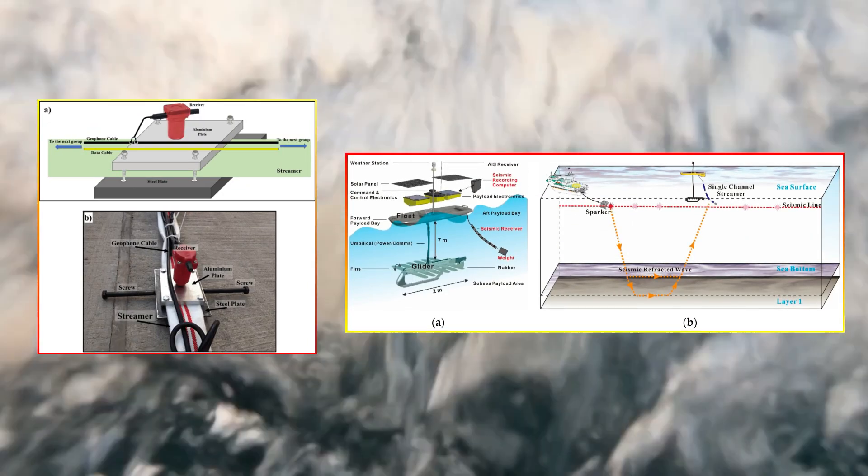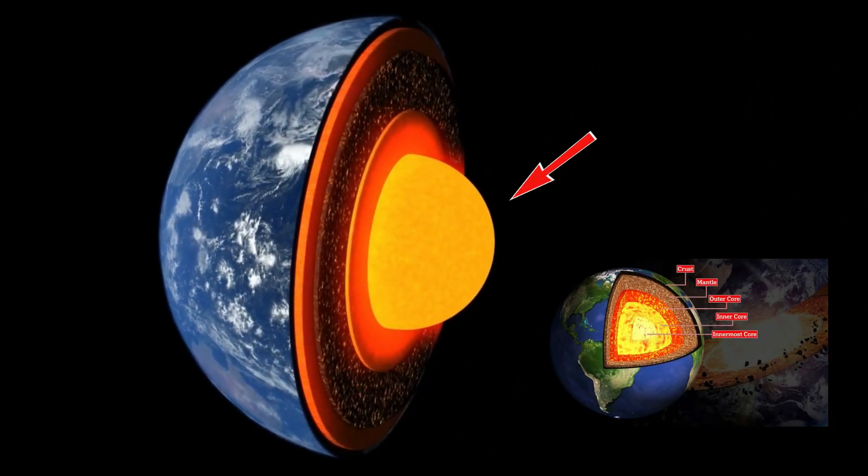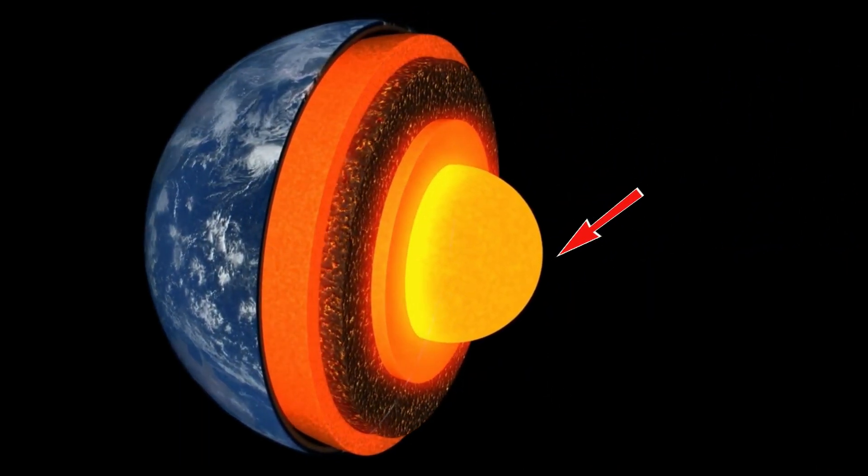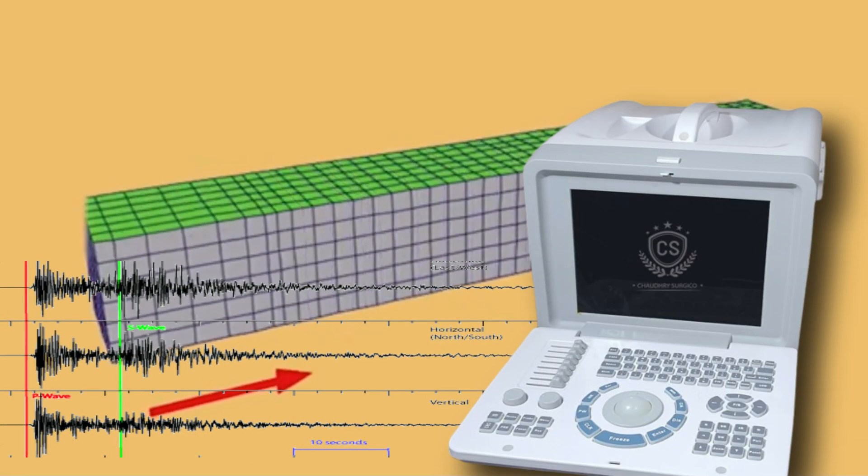This connection remains speculative for now, but it represents an exciting possibility. If these structures are linked to the magnetic field, they could open up entirely new avenues for understanding how Earth's magnetic properties function, and how they may evolve in the future.